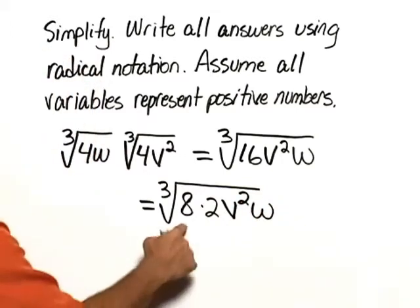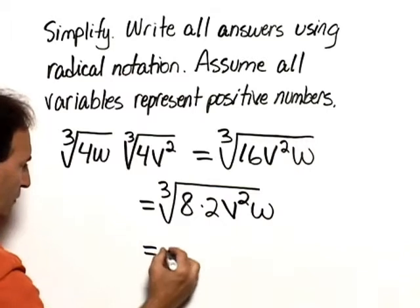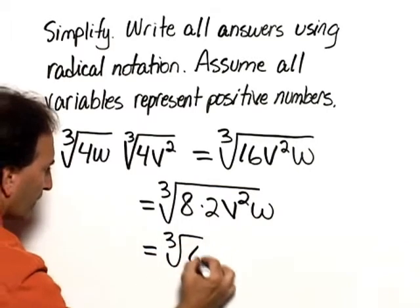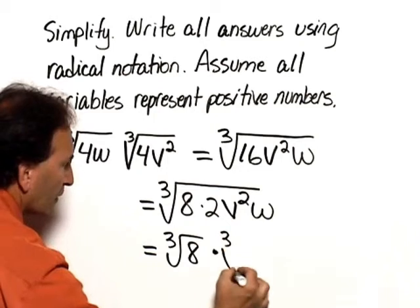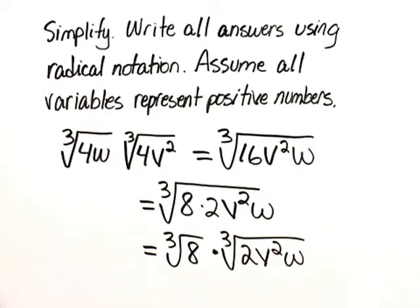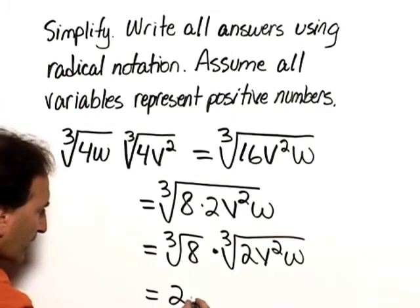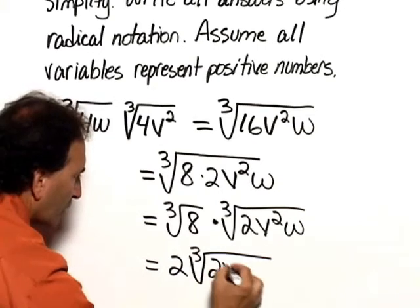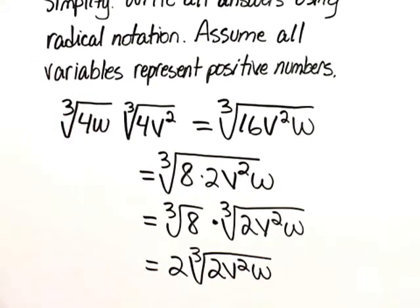And now we can say that this is equal to the cube root of 8 times the cube root of 2v squared w. And now the cube root of 8 is 2, so our final answer would be 2 times the cube root of 2v squared w.